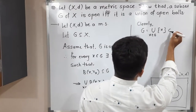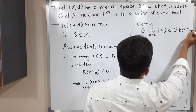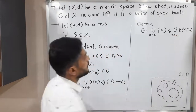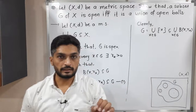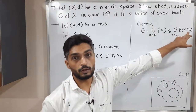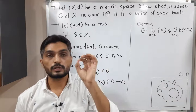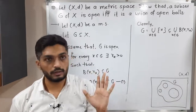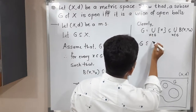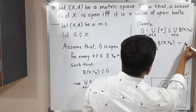Now, the singleton {x} is definitely a subset of the union of B(x, R_x) for x belonging to G. This is because every element x is the center of the ball B(x, R_x), so it is definitely a subset of that ball. Therefore, G is a subset of the union of B(x, R_x) for x belonging to G. I am calling this result (2).